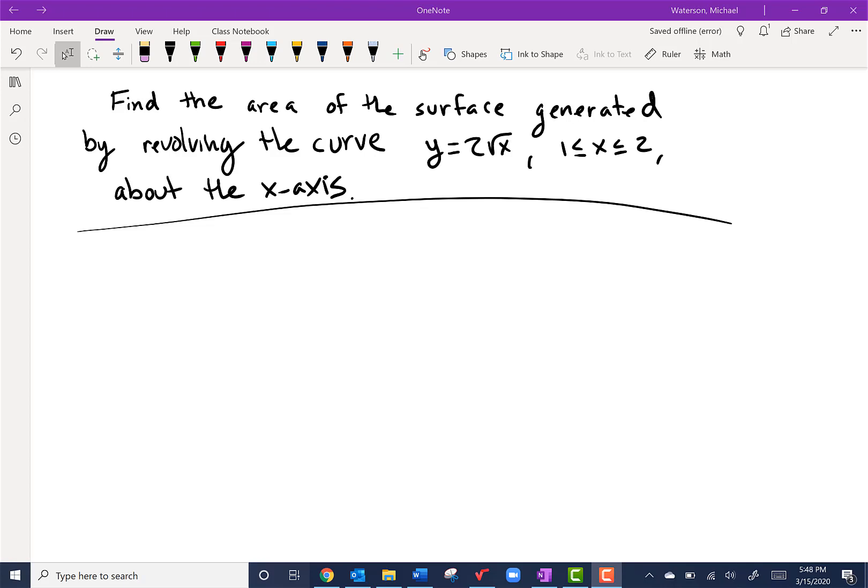Alright, let's begin 8.2. Now that you've seen the derivation of the surface area of a function revolved about an axis, let's see our first example. Find the area of the surface generated by revolving the curve y = 2√x, 1 ≤ x ≤ 2, about the x-axis.